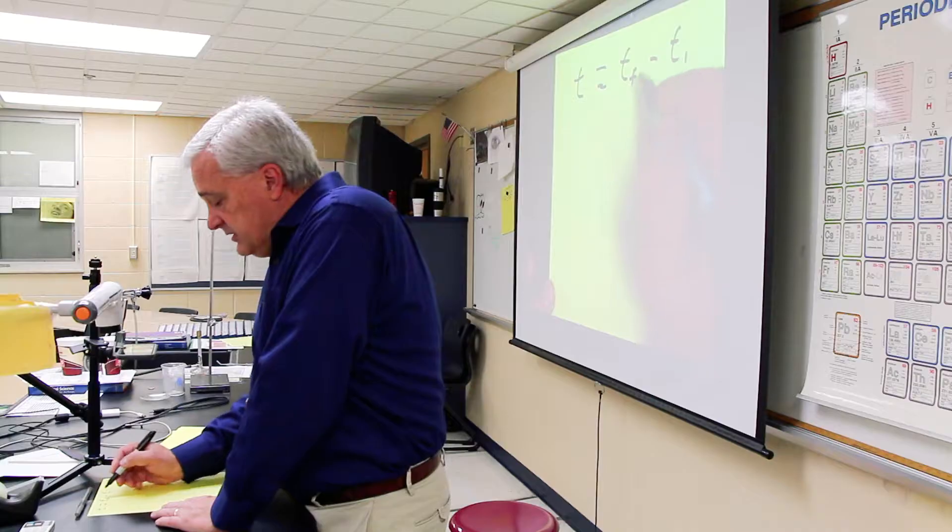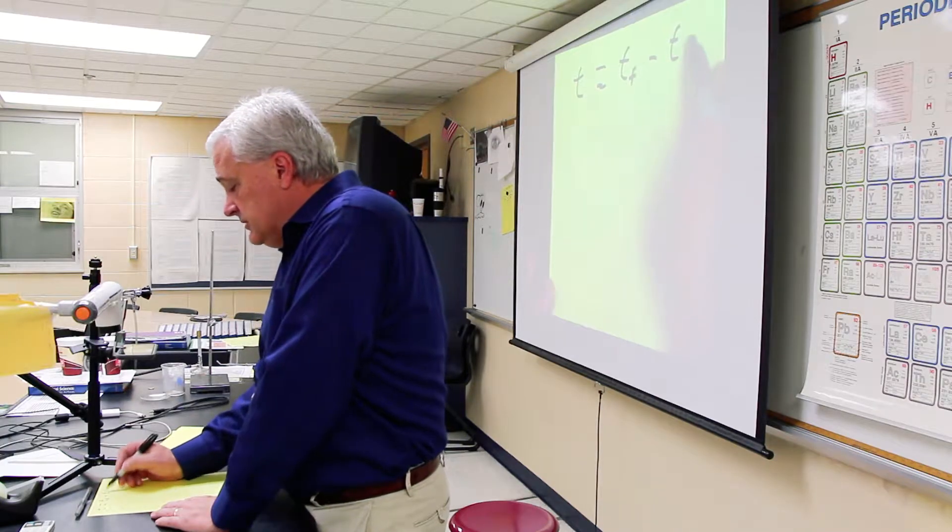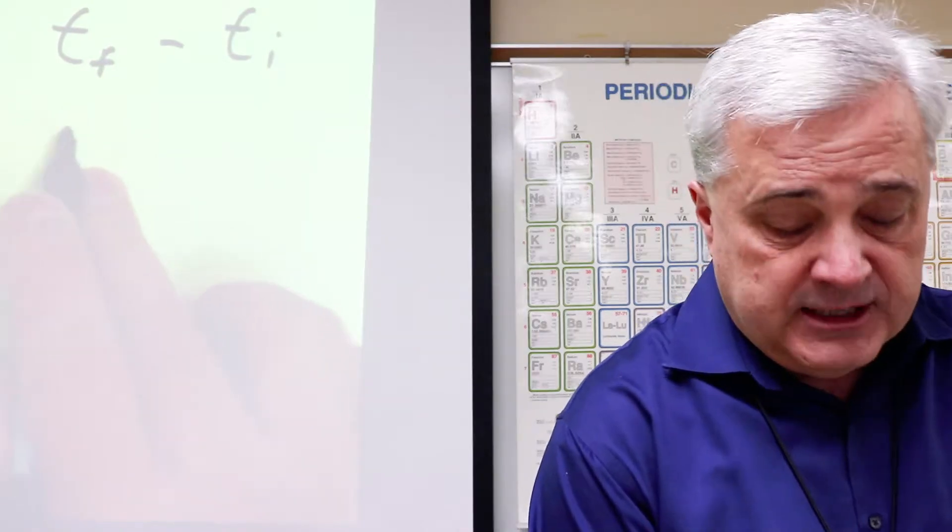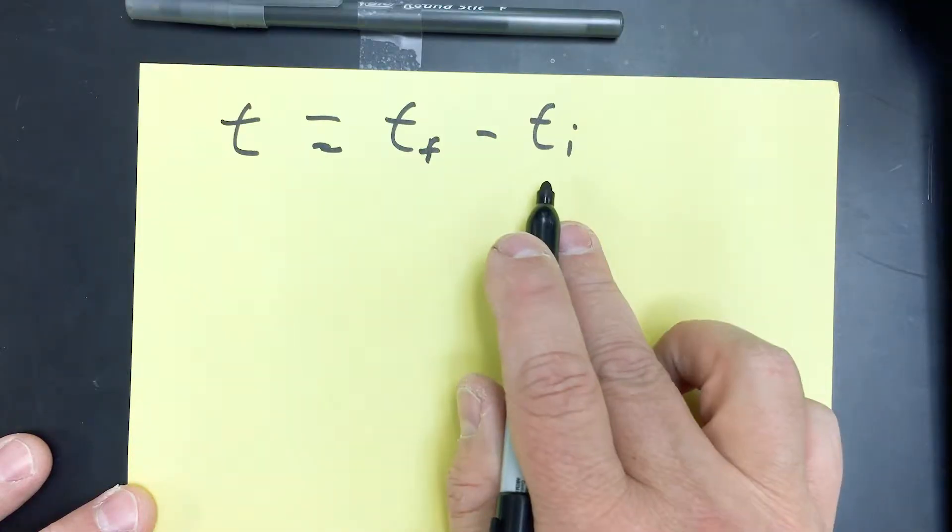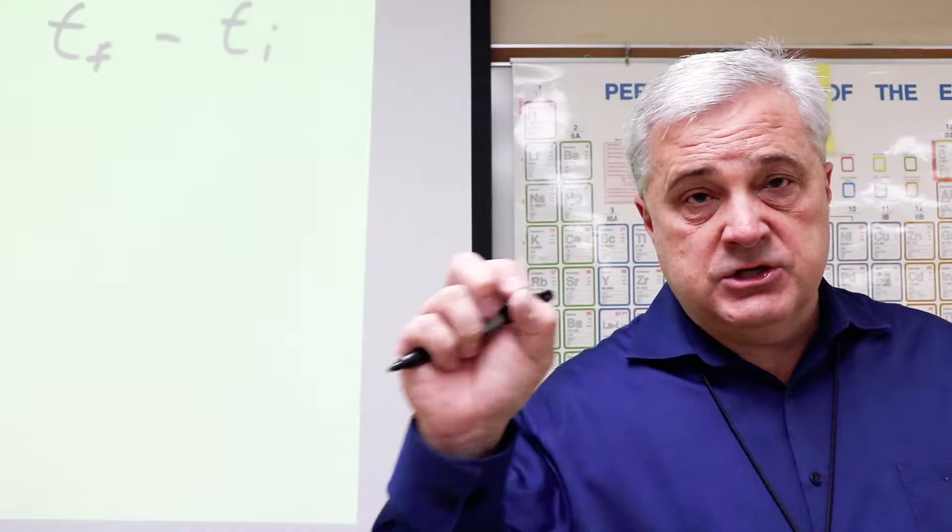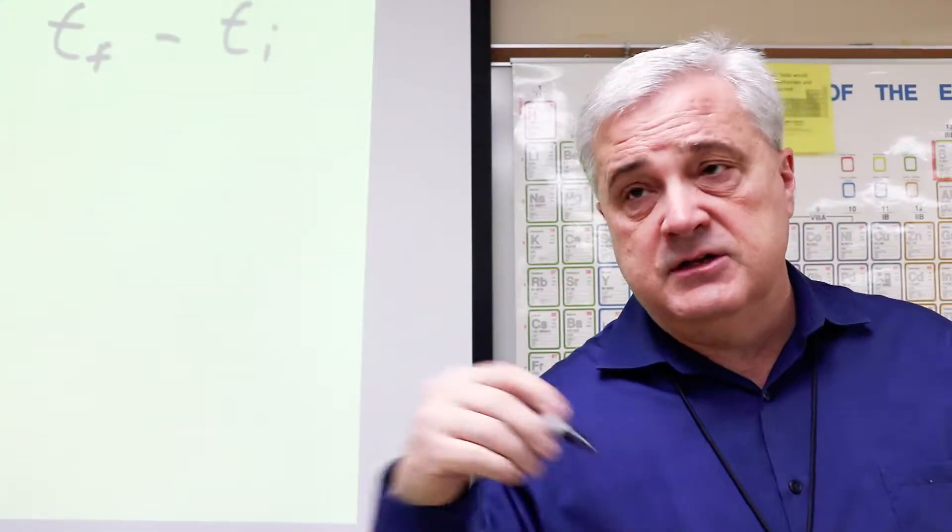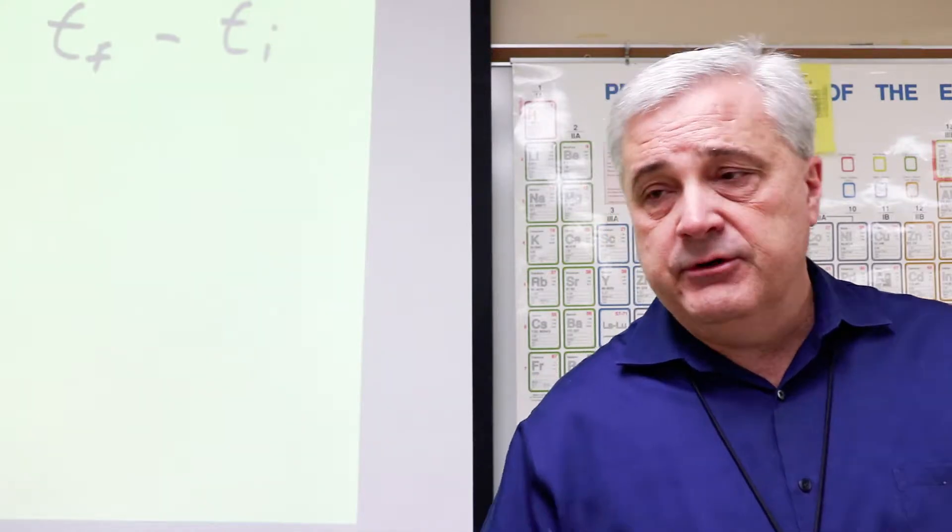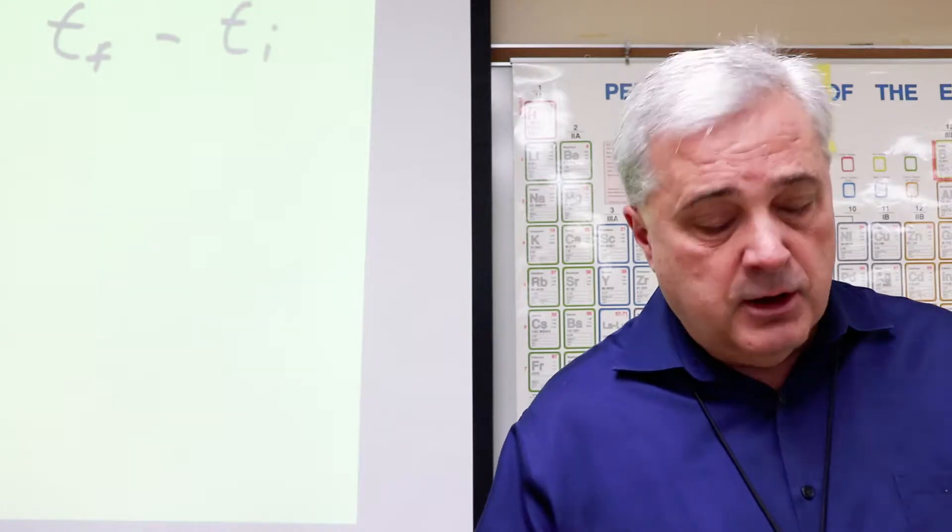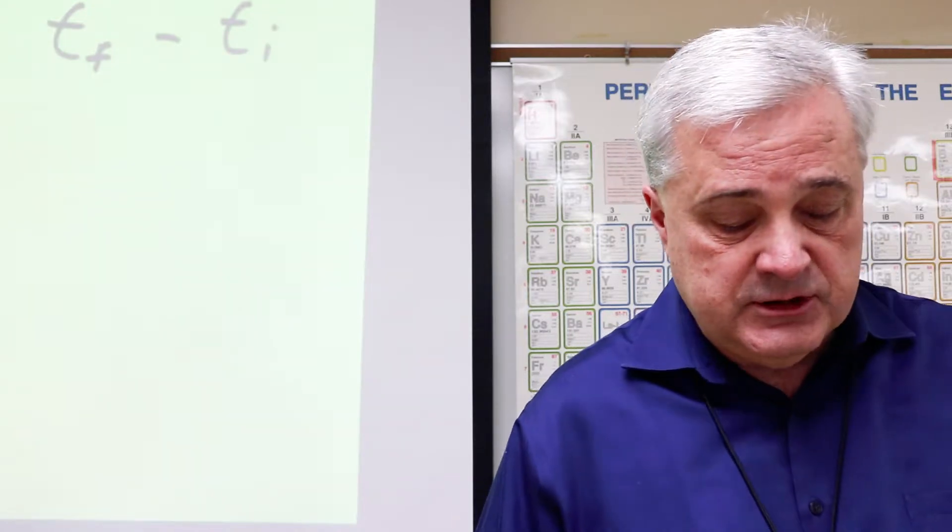Sometimes you'll use time intervals. You'll use subscripts like one and two. So it would be second time or third time minus the first time. And in some cases, you'll see the initial time as t sub 0 and t sub 1 or t sub 0 and t sub f. We're going to use initial and final most of the time. And through these examples, we'll use initial and final.